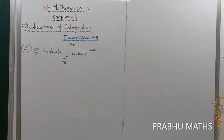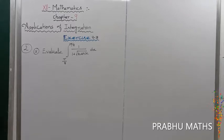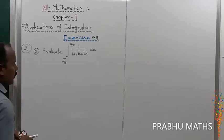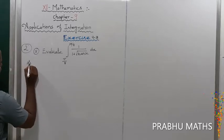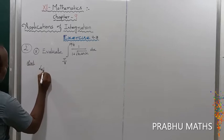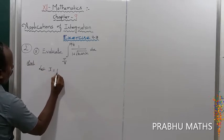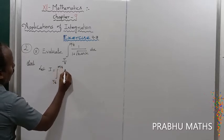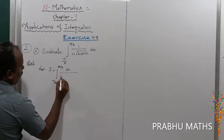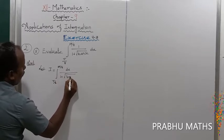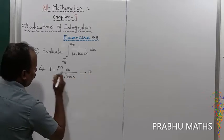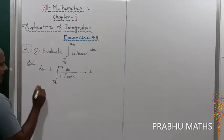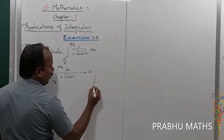Exercise 9.3, question 10: evaluate the integral from π/8 to 3π/8 of dx divided by 1 plus root of tan x, into dx. First of all, let us consider I is equal to integral from π/8 to 3π/8 of dx divided by 1 plus root of tan x. This is equation number 1.